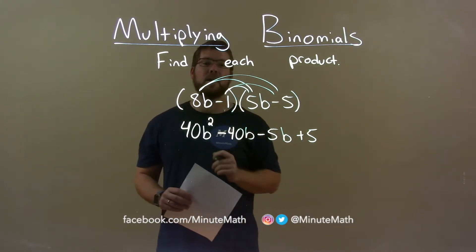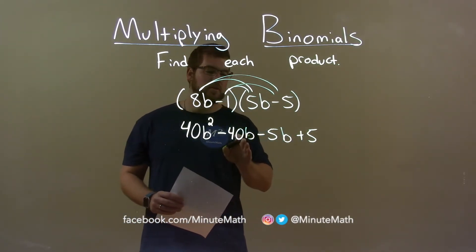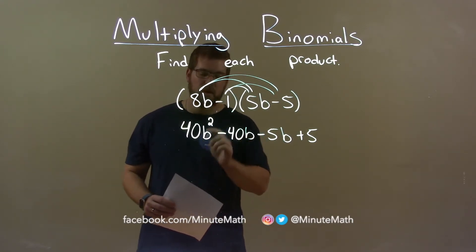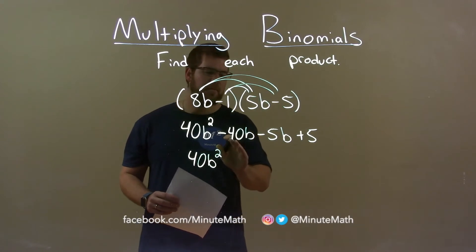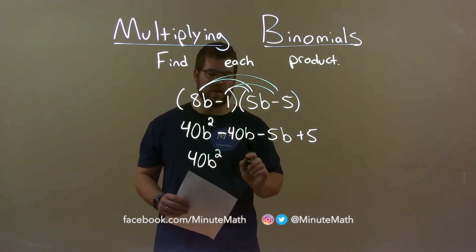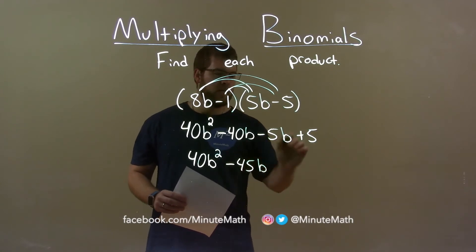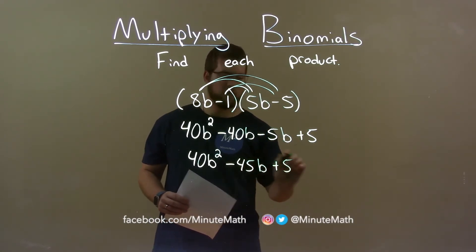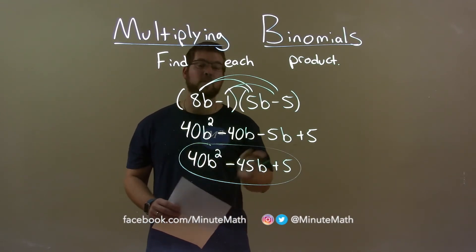Remember, the negative times the negative is a positive. So, now we want to combine our like terms which is just the b's in the middle. 40b squared comes down and minus 40b minus 5b is minus 45b. 5 comes down and our final answer is 40b squared minus 45b plus 5.